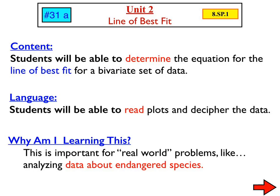Today, lesson 31a, line of best fit. Yesterday, we learned how to write the equation of a line using the point-slope equation or the point-slope formula. Over the next several lessons, we're going to be using that formula quite a bit. So today, we're going to determine the equation for the line of best fit for a bivariate set of data.